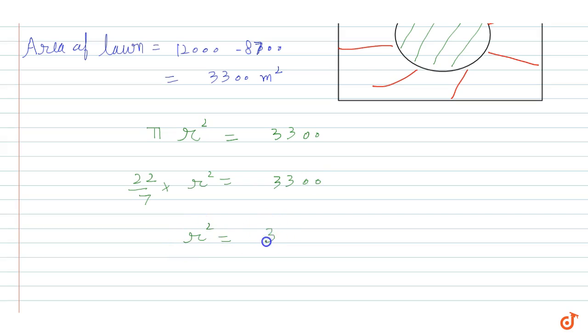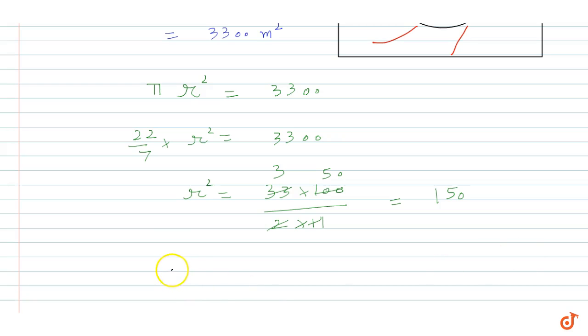So r² value will be r² equals 3300 divided by 22 by 7, which is 33 into 100 upon 2 into 11. So 33 upon 11 is 3, and 100 upon 2 is 50. So what is r²? r² is equal to 150.